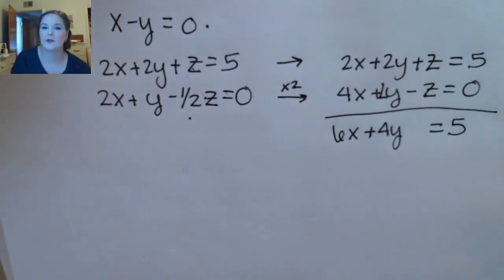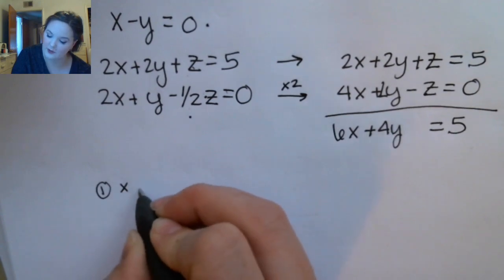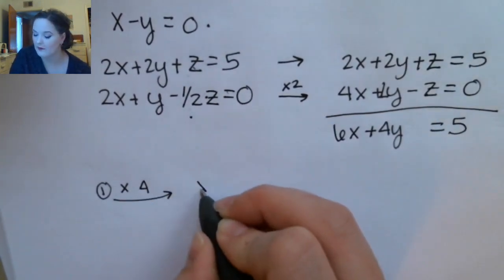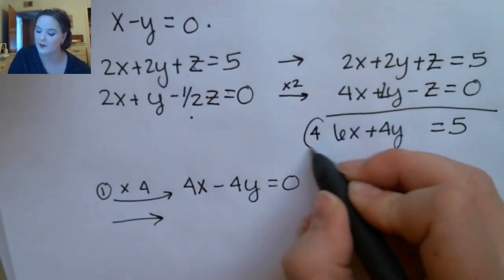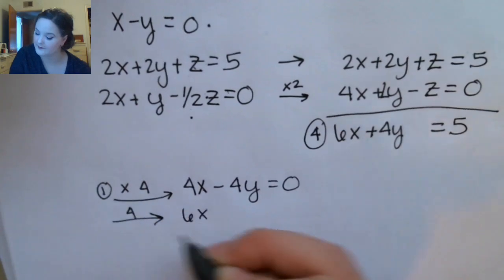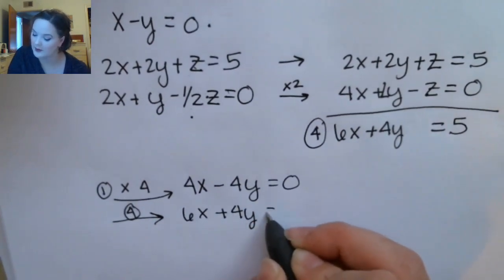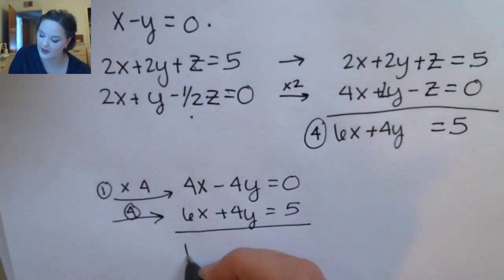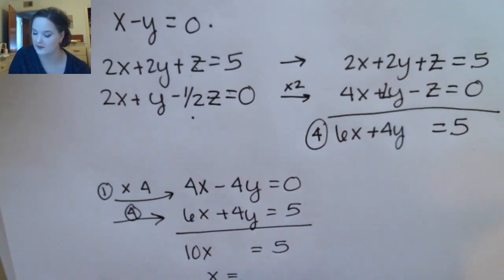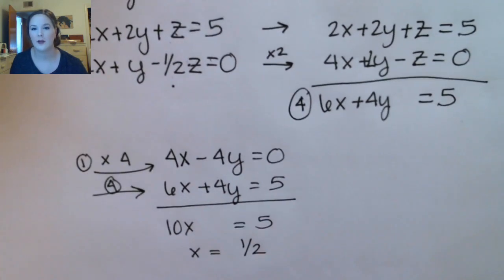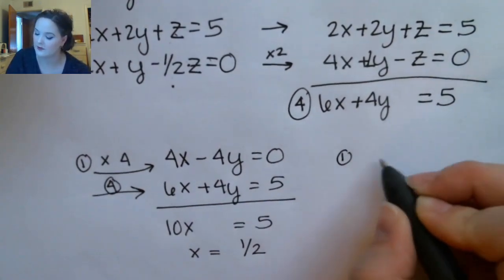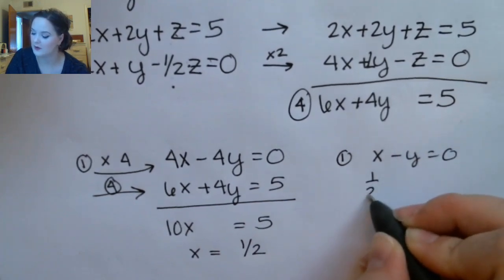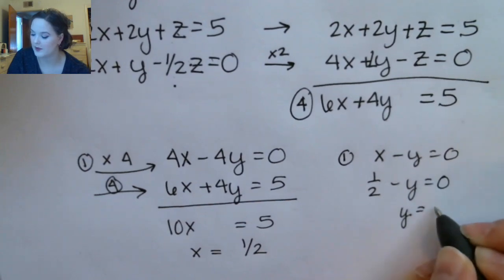Now I have two equations with two variables, so I'll use regular elimination. I take my first equation and multiply it by 4, getting 4x minus 4y equals 0, then copy equation 4: 6x plus 4y equals 5. Adding these together gives 10x equals 5, so x is 1/2. Now I plug back into the first equation — x minus y equals 0 — which gives me y equals 1/2.